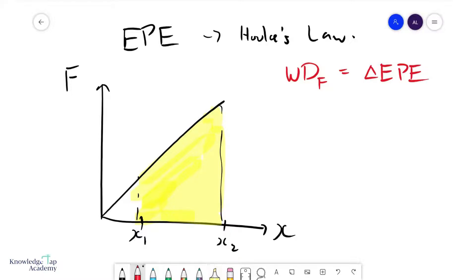We can say that the change in EPE is simply the area of this trapezium over here. So that would be half—let's put it this way, we have to take these two things. This will be F2, this will be F1, so F2 plus F1 times X2 minus X1.